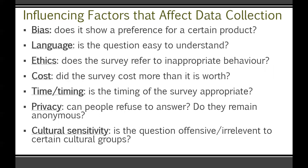I'd like you to copy this whole slide down — you will need these things in your notes as we go forward. There are seven criteria here. Bias: does it show a preference for a certain product? Language: is the question easy to understand? Ethics: does the survey refer to inappropriate behavior? Cost: did the survey cost more than it's worth? Time/timing: is the timing of the survey appropriate? Privacy: can people refuse to answer? And cultural sensitivity: is the question offensive or irrelevant to certain cultural groups?